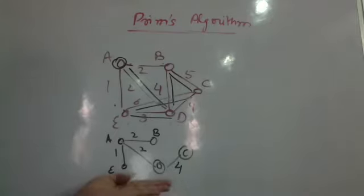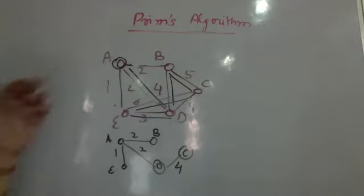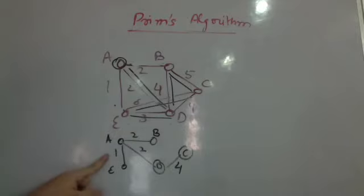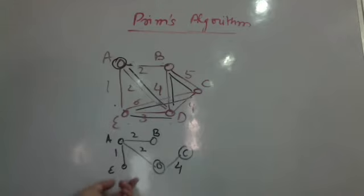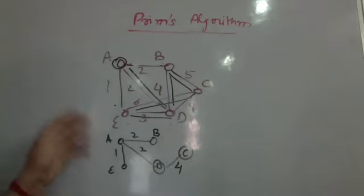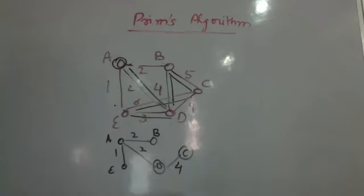This is how Prim's algorithm proceeds — again a greedy algorithm. The key difference is that instead of picking edges, I am picking vertices. From every vertex I choose an edge with minimum weight connecting to a vertex not already part of the minimum spanning tree. Any edge with minimum weight adjacent to the tree connecting to a node not yet in the tree is included, otherwise excluded.